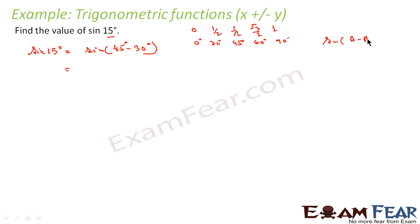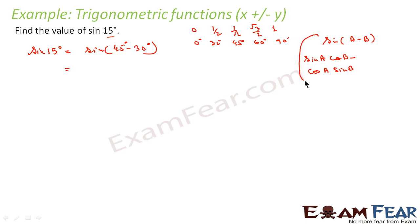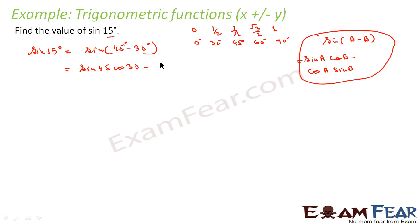For sin(a−b): son wants to be with boss, so in the first term son does part a and boss does part b — that is sin a cos b — then minus, and in the second term cos does part a and sin does part b — that is cos a sin b. So sin(a−b) = sin a cos b − cos a sin b. Applying this: sin(45°−30°) = sin 45° cos 30° − cos 45° sin 30°.